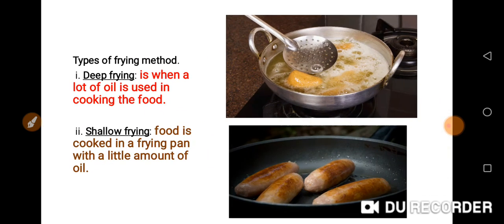We have different types of frying methods: we have deep frying and we have shallow frying. Deep frying is when a lot of vegetable oil is used in cooking food. Shallow frying is when food is cooked in a frying pan with a little amount of oil, as you can see on the screen.